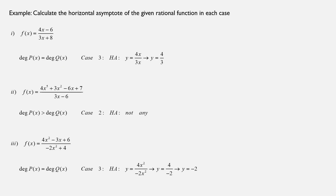Let's work some examples. Example 1: f(x) equals (4x minus 6) over (3x plus 8). Both the numerator 4x minus 6 and denominator 3x plus 8 have degree 1 — the same degree. So I take the highest degree terms: 4x from the numerator and 3x from the denominator, and divide them. The horizontal asymptote is y equals 4x over 3x, which simplifies to y equals 4/3.